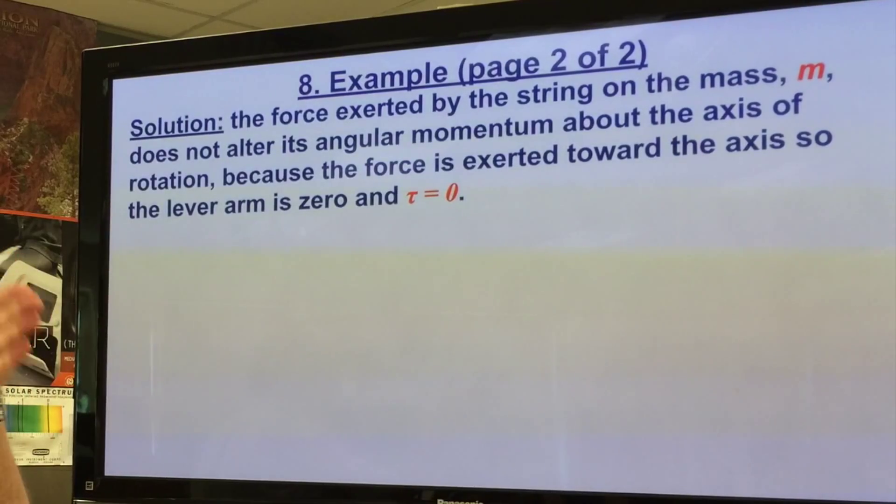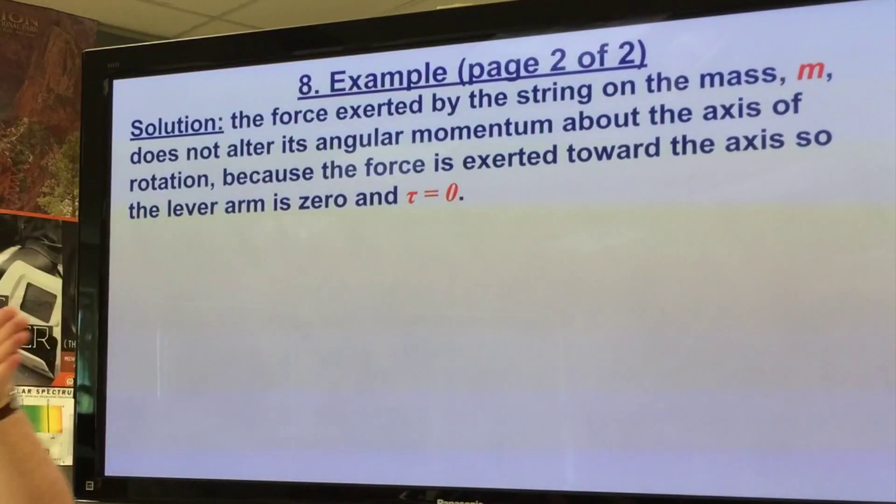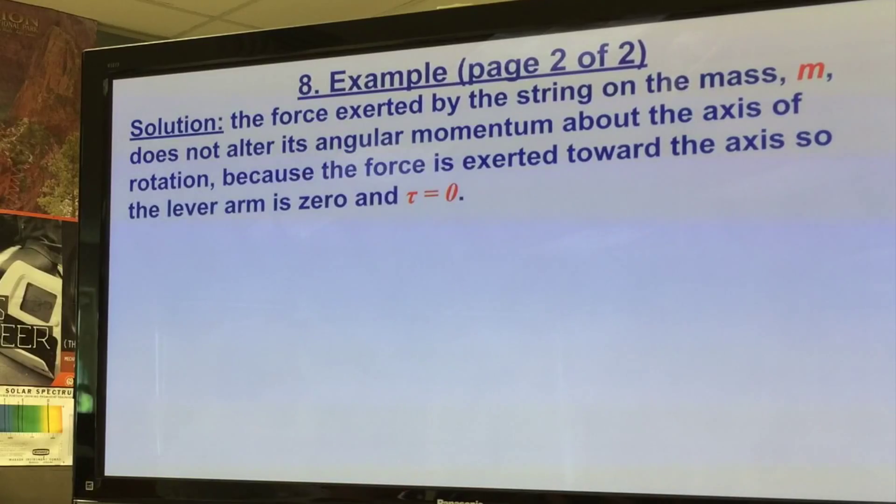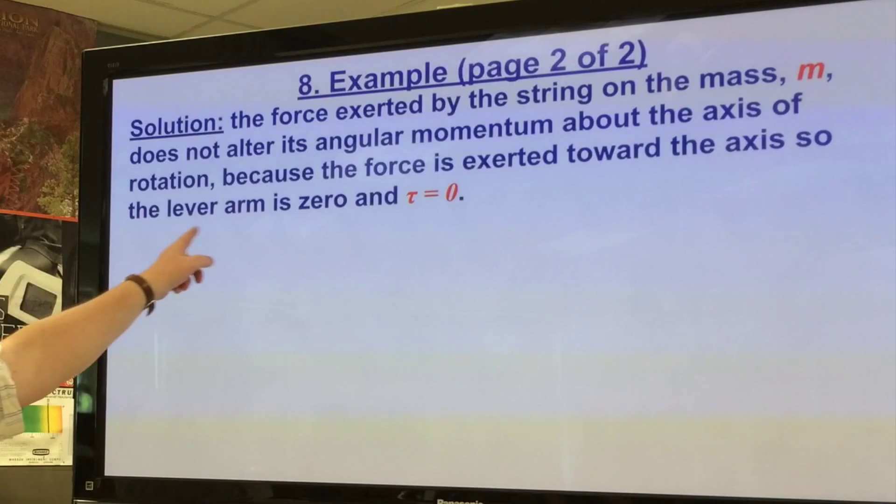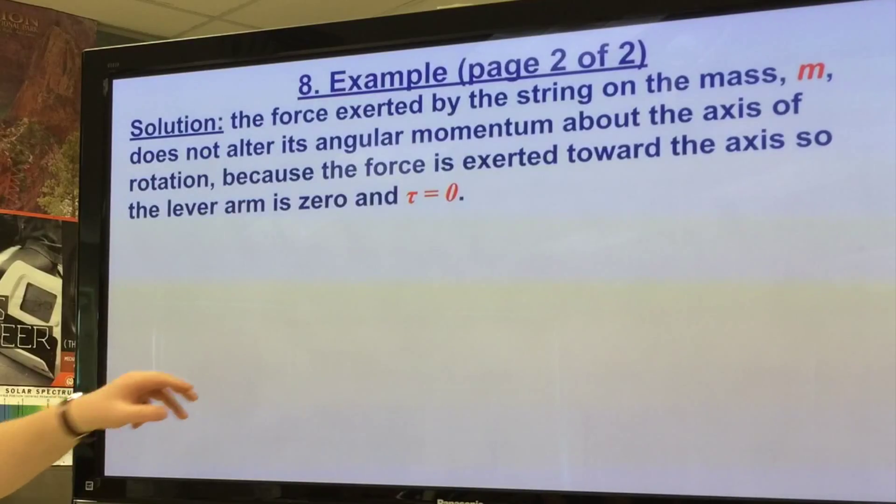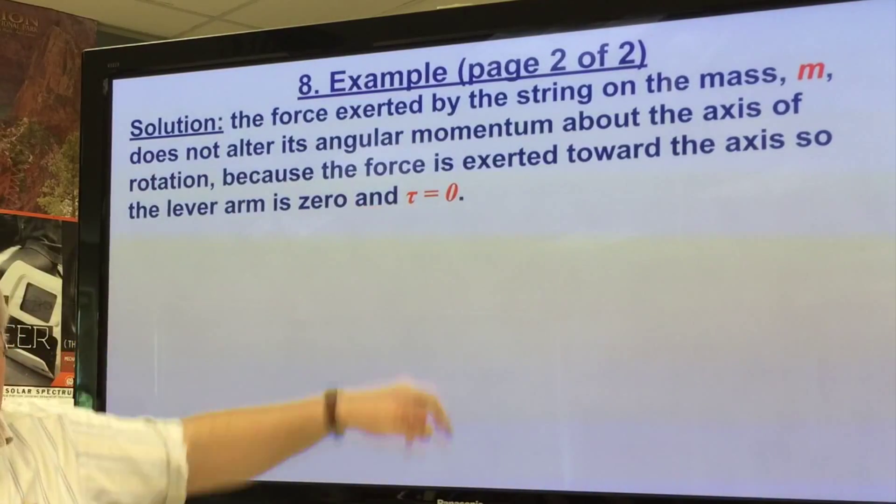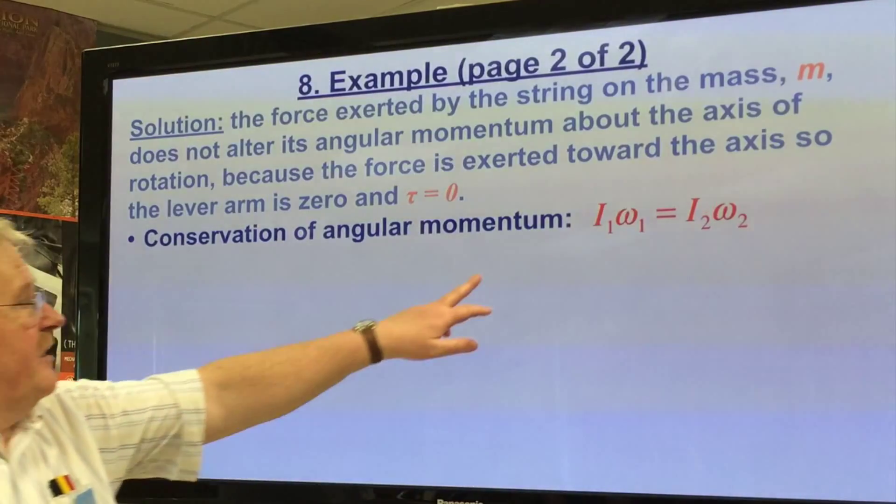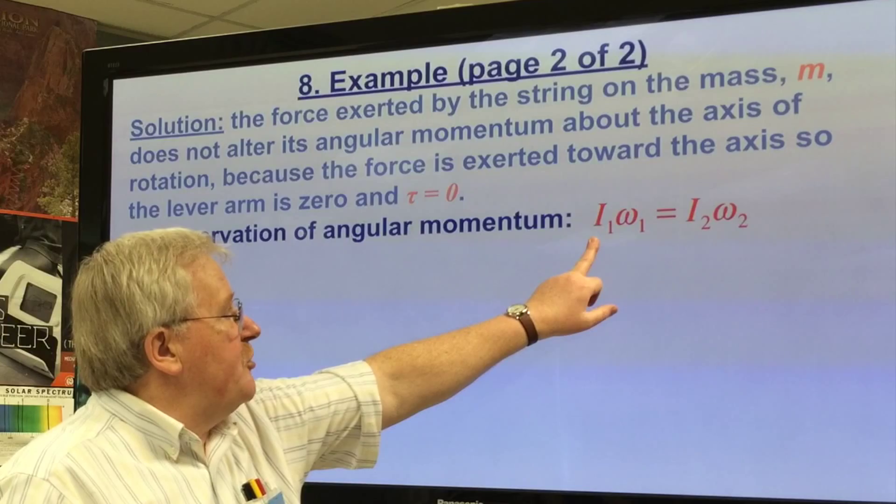What is the speed v2 of the mass now? Well, the force exerted by the string on the mass m does not alter its angular momentum about the axis of rotation because the force is exerted towards the axis, right along that radial line towards the axis. That is, the force of tension in the string is not at right angles, so there is no net torque being applied. No net torque being applied means that we don't have any change in the net angular momentum of the system.